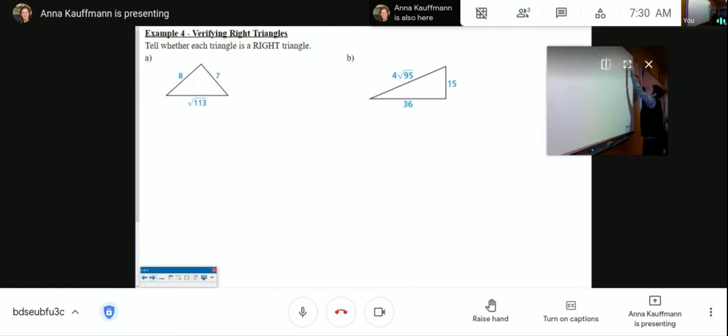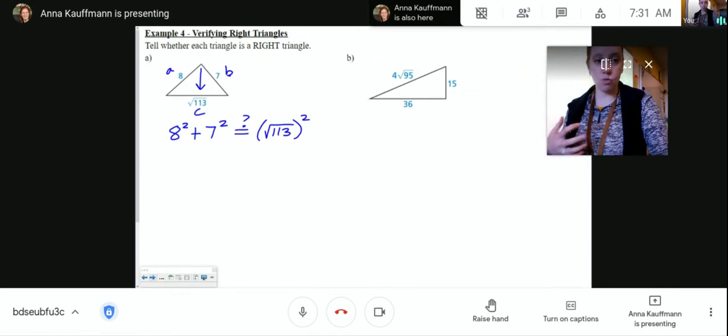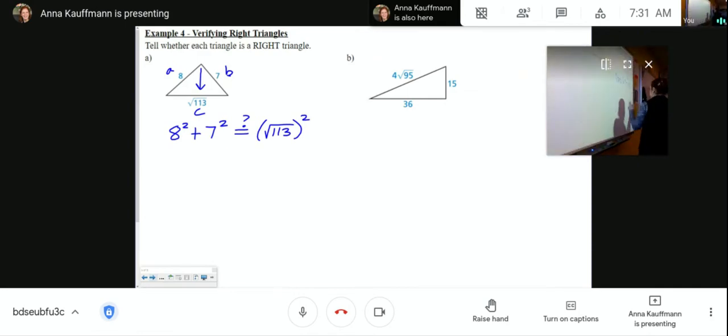So I think that the 90 degree angle should go here. So I think that should be my C. This should be my A and this should be my B. And we're going to test, is 8 squared plus 7 squared, is that question mark equal to the square root of 113 squared? Notice that I put the square root of 113 in parentheses because we're squaring that entire thing. So now 8 squared is 64. 7 squared is 49? Question mark. The cool part about this one is when you square a square root, they cancel each other. And you're left with just 113. And 64 plus 49, guess what, is 113. So 113 does equal 113. So yes, this is a right triangle.